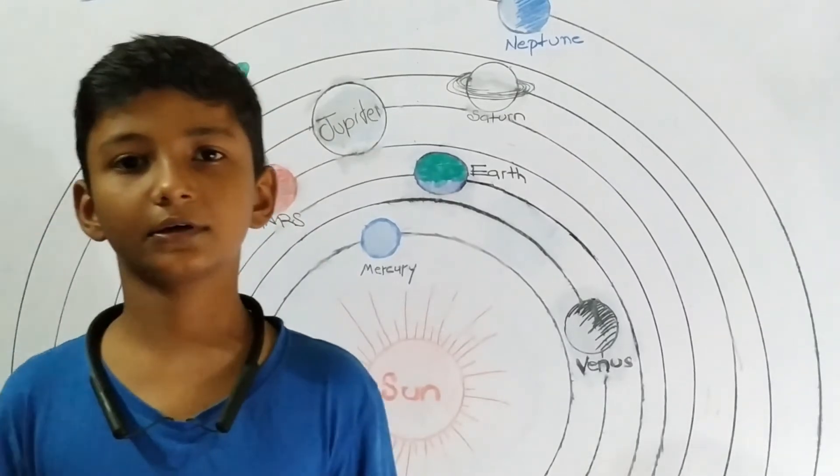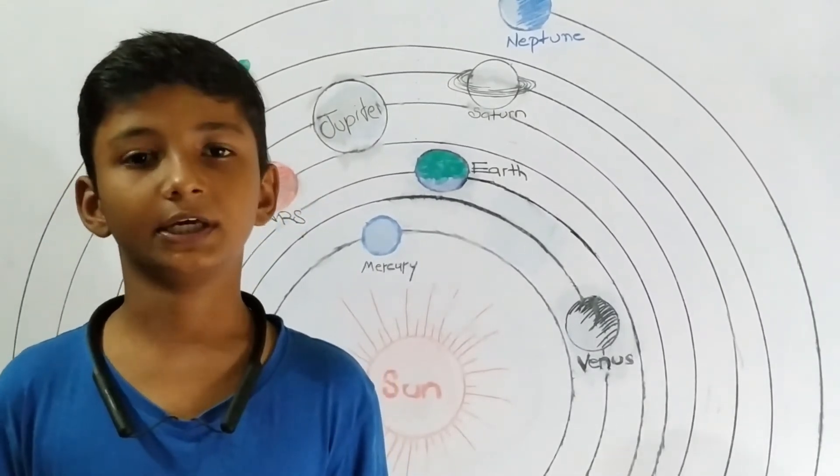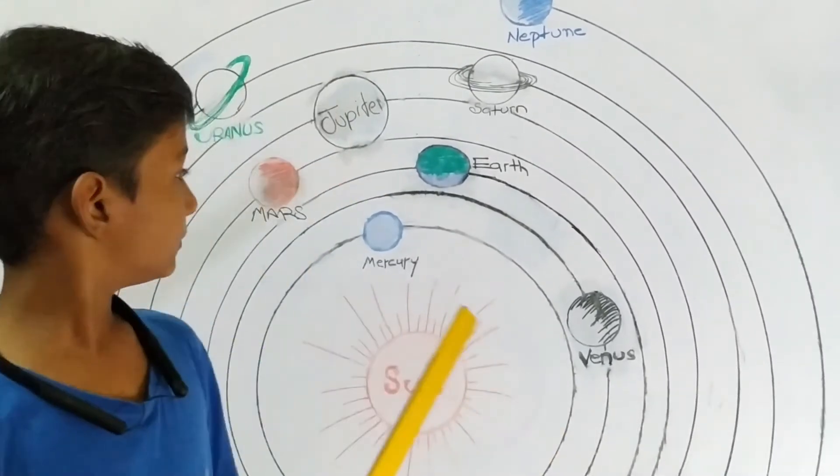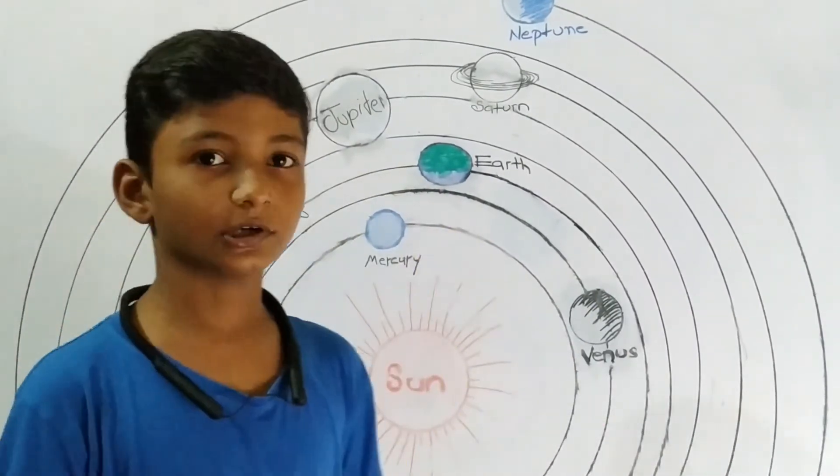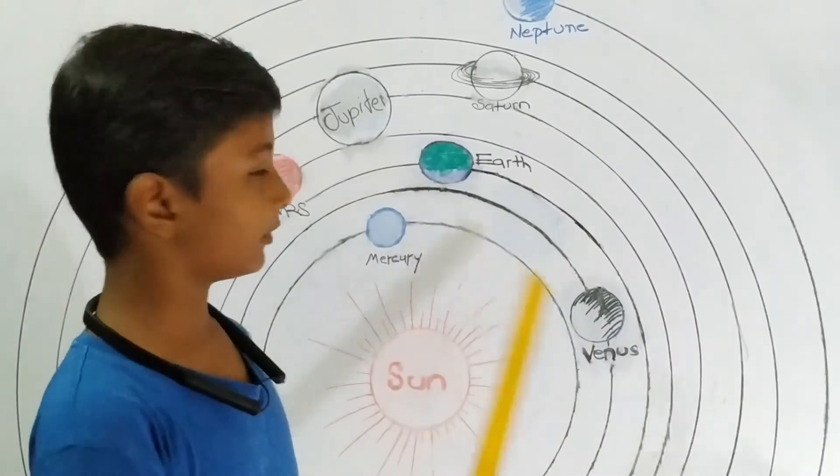Earth rotates on its axis and completes one rotation in 24 hours. Due to this, day and night occur. Earth is the only planet which has life on it.